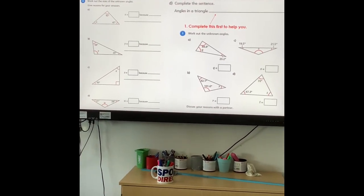Over here, you've been given some decimals. 88.4, add that to 23.2, take it away from 180, 68.4. B, 42.1, add that to 101.6, take it away from 180 and you get 36.3.